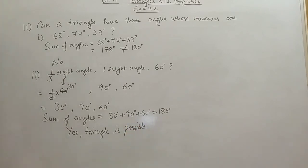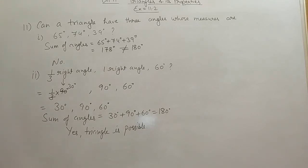A triangle is only possible when the sum of angles equals exactly 180 degrees. If it is more or less than 180 degrees, it is not possible. This exercise is completed here. Hope you understood. Thank you for watching this video.